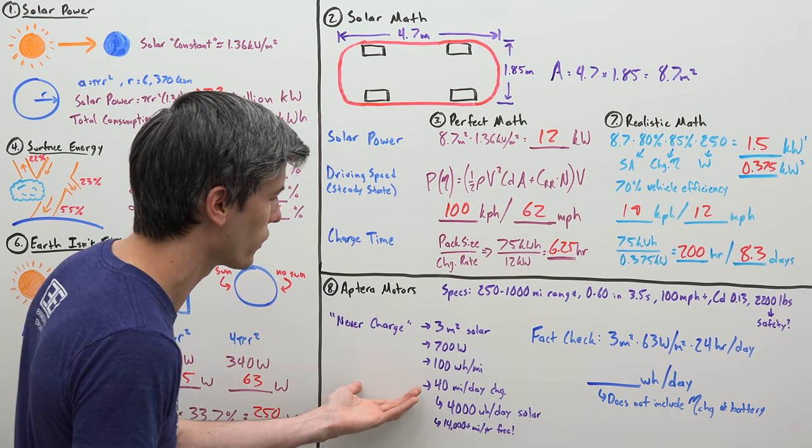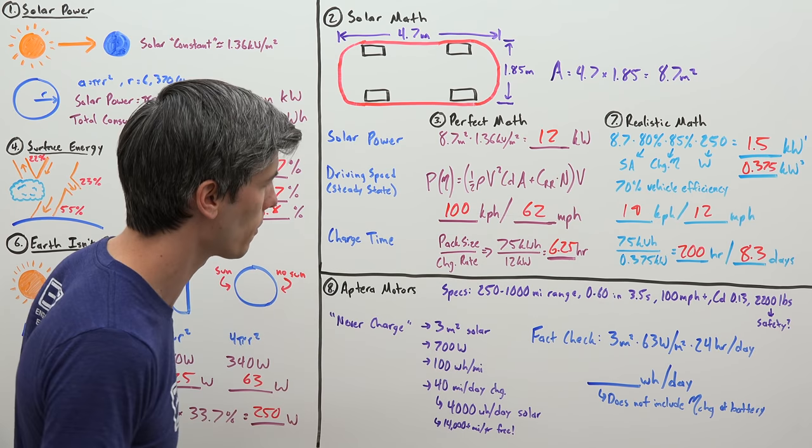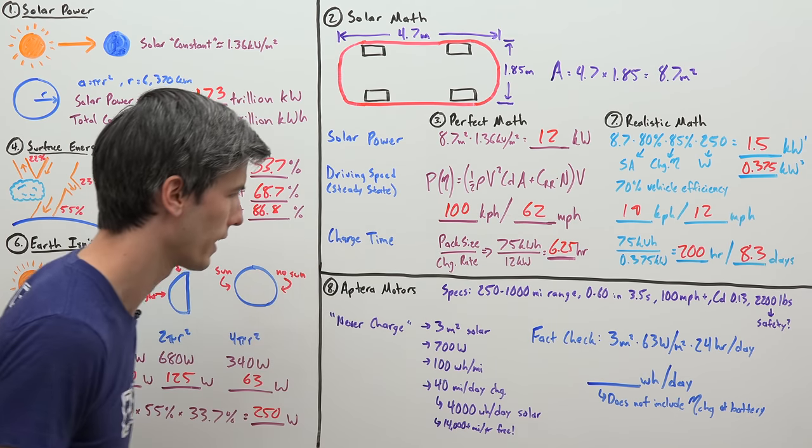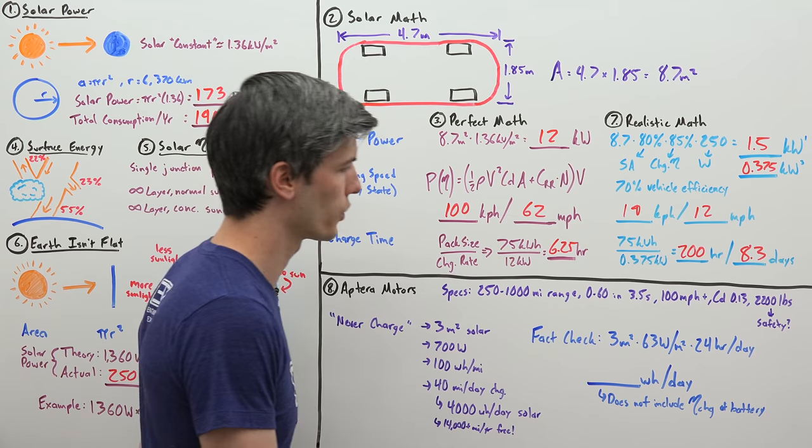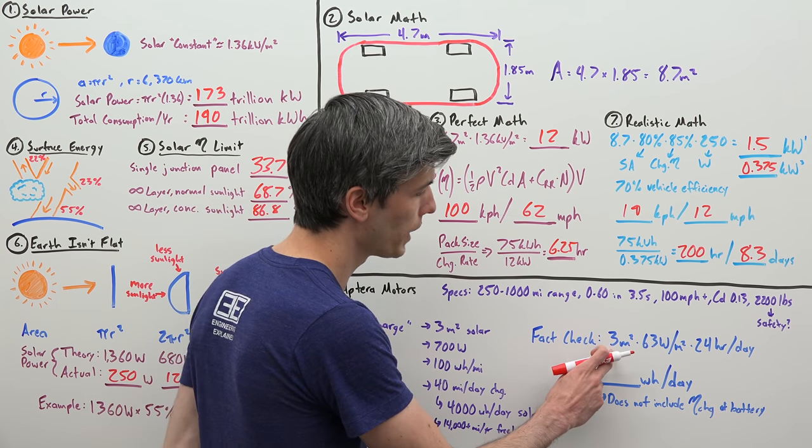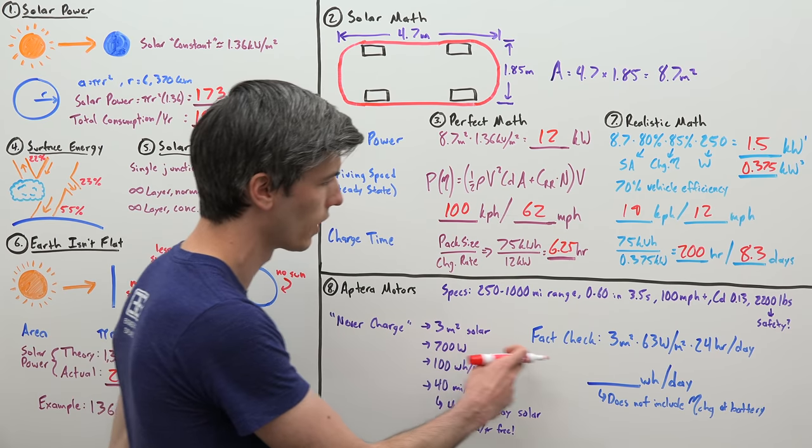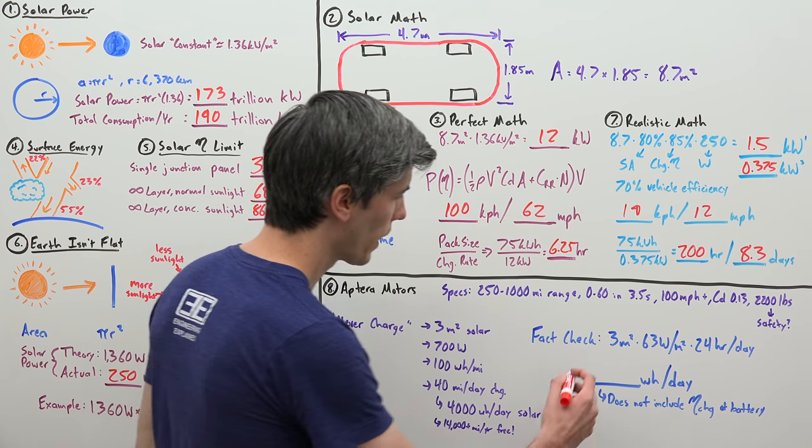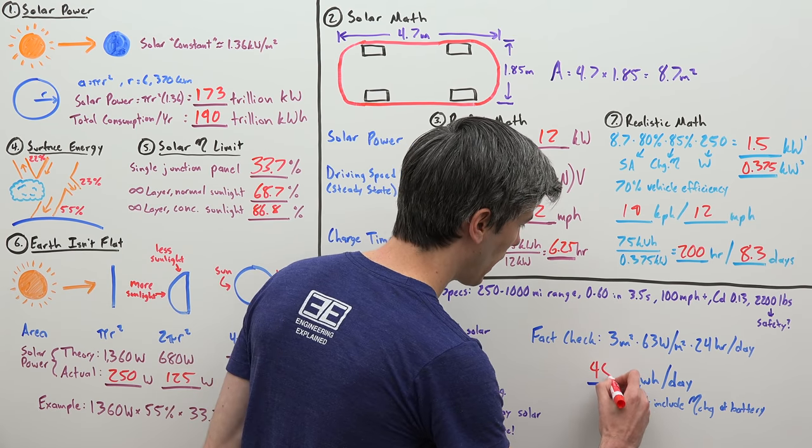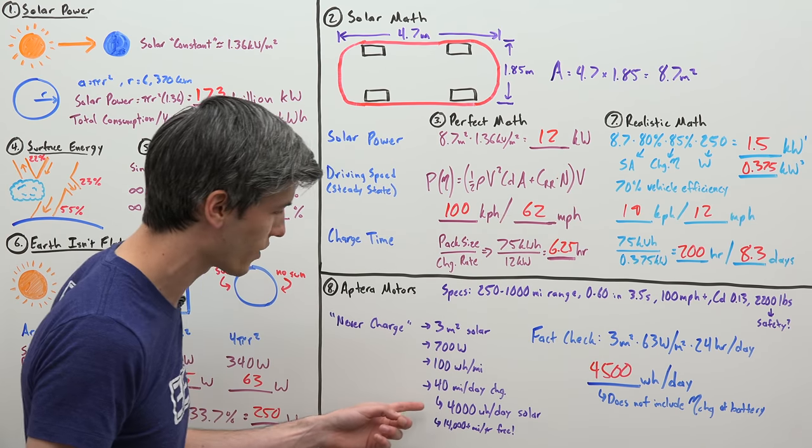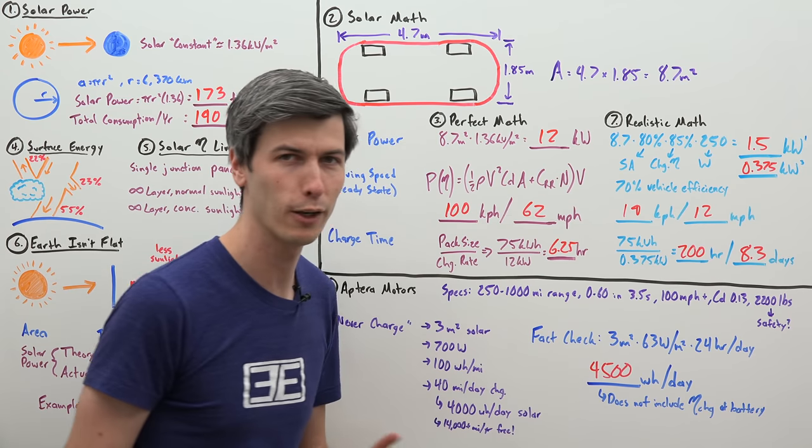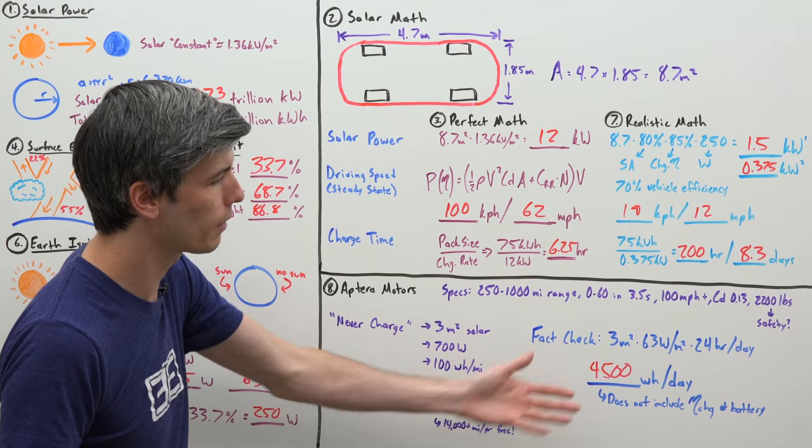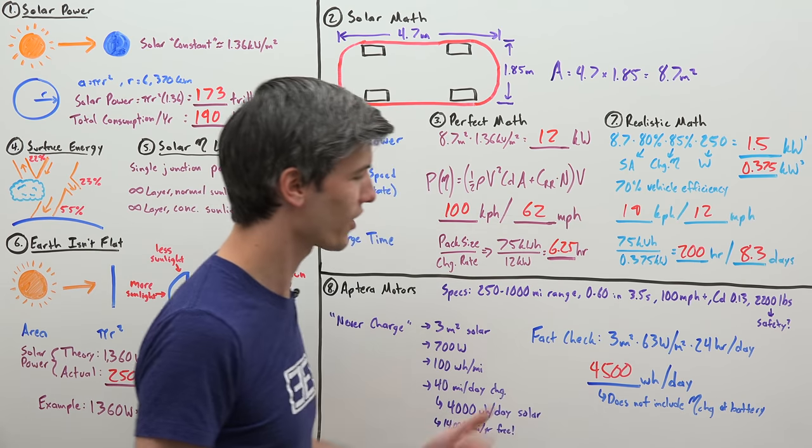So I wanted to do a little fact checking and see, does this math actually work out? And so going back to our 63 watt number here being the average of wherever you are on the planet in a given day, how much energy you're going to get from that solar panel. So if we have three meters squared of solar panels, which is what they state, multiply that by our 63 watts per meter squared. And we've got our 24 hours in a day. Well, that gives us about 4,500 watt hours in a day, which again, so we need 4,000 at the battery. This is saying 4,500 at the solar panels. So if you had an 89% charging efficiency for your battery, the math actually checks out.